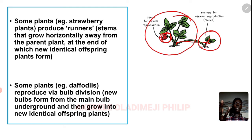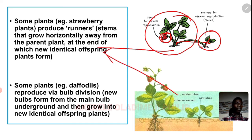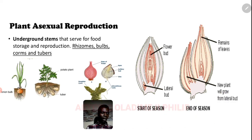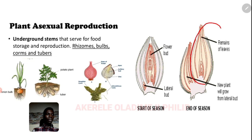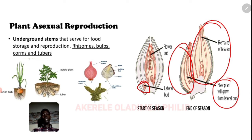Another example is the daffodil, which reproduces via bulbs, similar to the onion. New bulbs are formed from the main bulb underground and grow into new identical offspring. You can see the main bulb growing with a new one developing beneath it. Every time you harvest the main one, the new one will form another to succeed it. This is an example of asexual reproduction in plants.